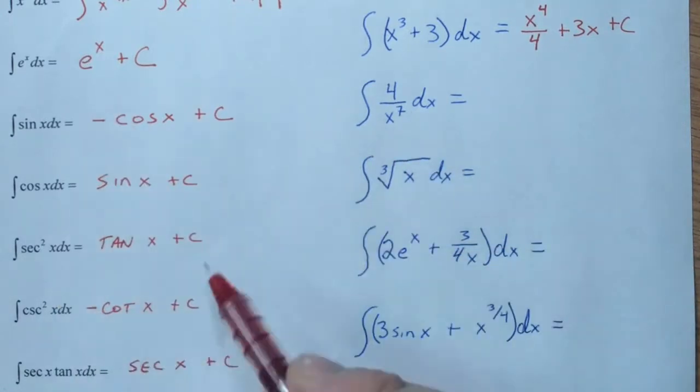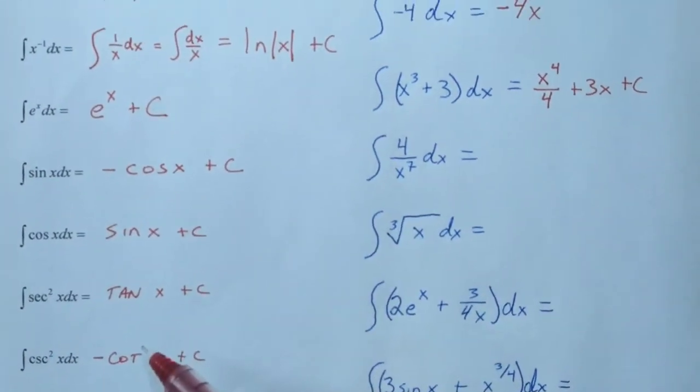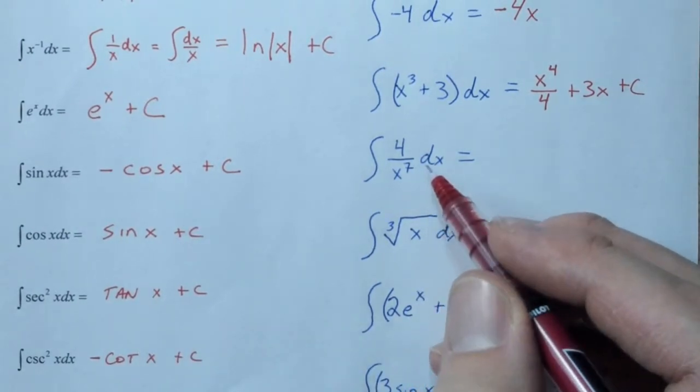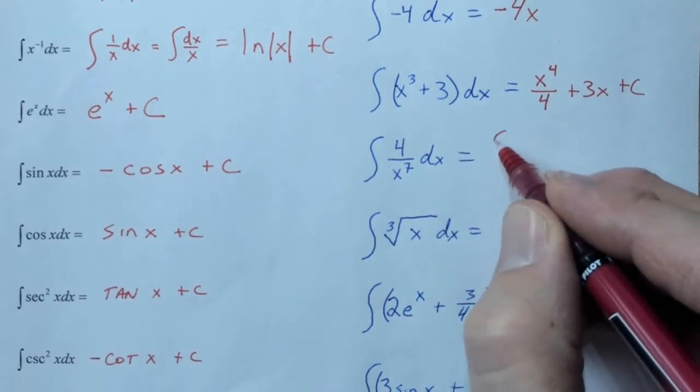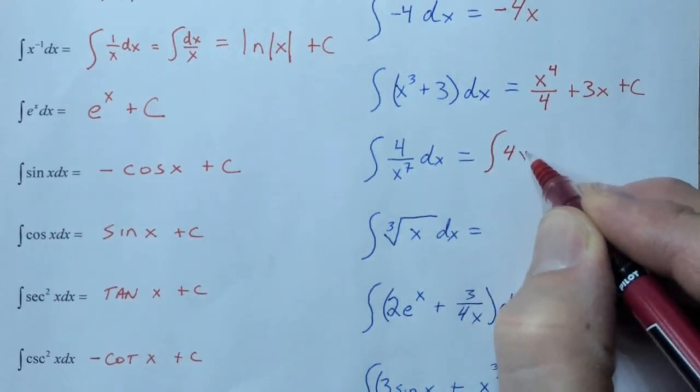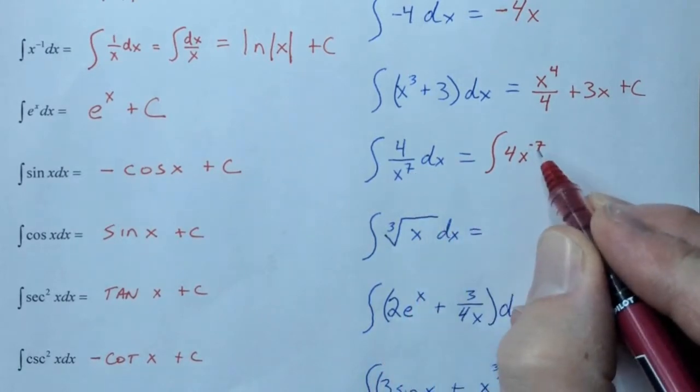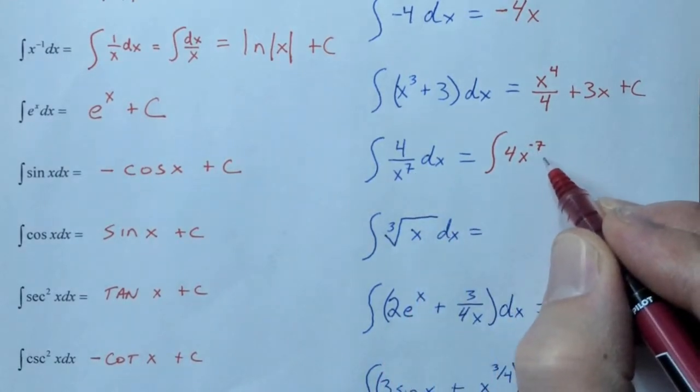Now, in regards to fractions, nothing's going on here. That's something with u substitution. How do we write this so that there's no longer a fraction? Yeah, we know that this becomes 4x to the negative 7th. An exponent, which was positive, becomes negative when we move it into the numerator.